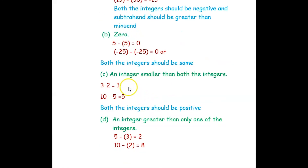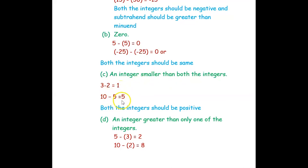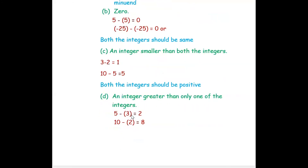The next question is to find two integers such that their difference is smaller than both integers. If you take 3 minus 2 it is 1, and 10 minus 5 is 5 — both results are smaller than both integers. So in this case both integers should be positive.